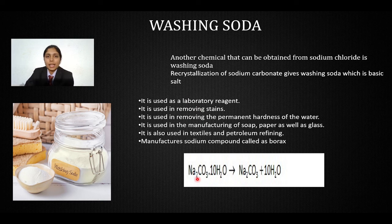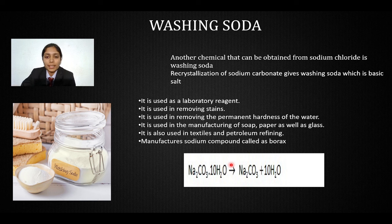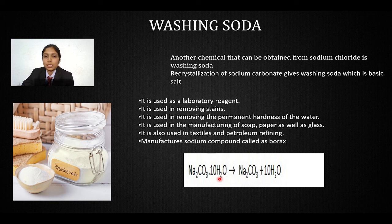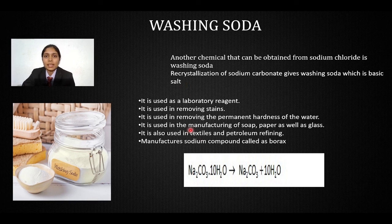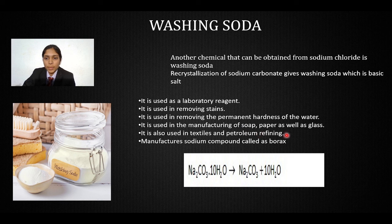The formula for washing soda is Na₂CO₃·10H₂O. The 10H₂O represents the water of crystallization — fixed water molecules present with its molecular formula. Uses of washing soda include as a laboratory reagent, for removing stains, removing permanent hardness of water, in textiles, petroleum refining, manufacturing of soap, and making paper and glass. There is also the compound borax, which is used for that purpose.